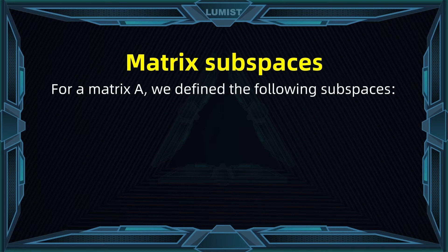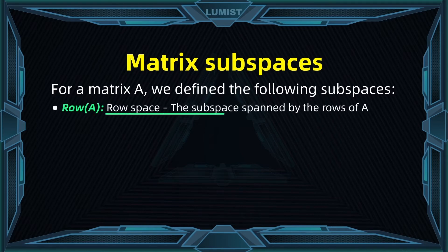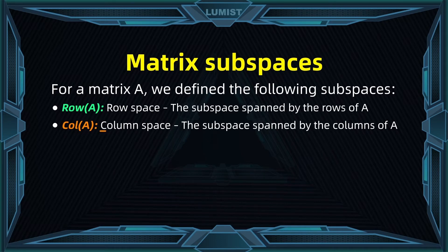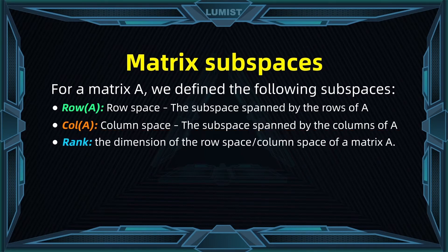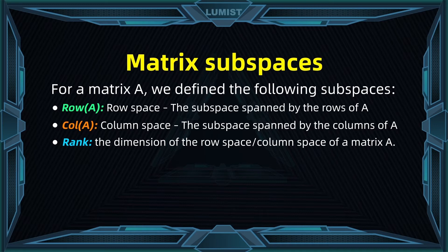For a matrix A, we define the row space, denoted by row of A, as the space formed by the linear combinations of the rows of that matrix A. A key concept here is called Rank, which is the dimension of the row space or column space of a matrix A. And there is a special property: the row space and the column space have the same dimension always.